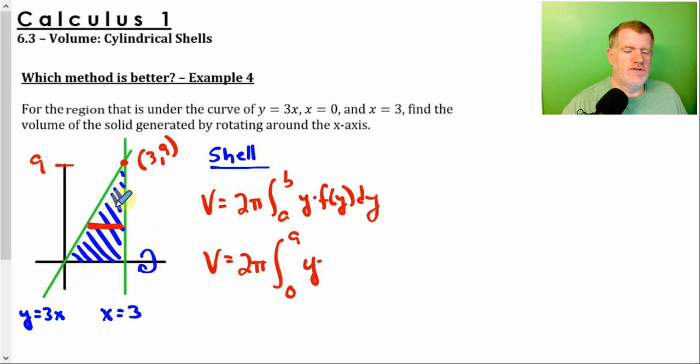y times the function of y. And we want to know this distance from here to here. Now again, these are in terms of y. So I have to actually solve this equation for x. So y over 3 would equal x. So what's an expression for this distance, the height of our shell?